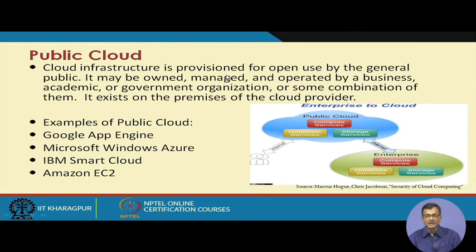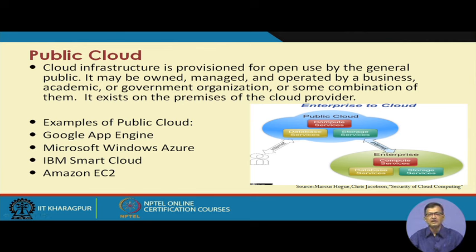The cloud infrastructure is provisioned for open use by the general public — organizations, enterprises, and anyone who can pay and use the services. There are definitely some legal and policy issues which need to be conformed to. It may be owned, managed, and operated by a business, academic institution, government organization, or some combination of them. It exists on the premises of the cloud provider, meaning the computing and storage infrastructure reside at the CSP's premises, not at the user's premises.